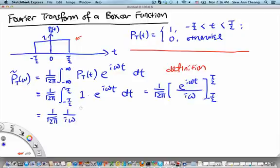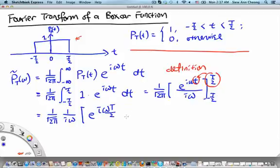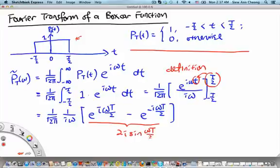and then what we left in here will be if we substitute in the upper limit, what we will get is e^(iωT/2) and then minus e^(-iωT/2). Then we make use of the fact that this thing here is equals to 2i sin(ωT/2).